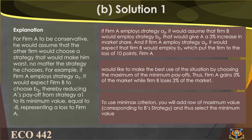If Firm A employs strategy A2, it would assume Firm B would employ strategy B3, giving A a 3 percent increase in market share. If Firm A employs strategy A3, it would expect Firm B to employ B1, putting Firm A to a loss of 10 points. Firm A would choose the maximum of the minimum payoffs, thus gaining 3 percent of the market while Firm B loses 3 percent. To use the minimax criterion, you add a row of maximum values corresponding to B's strategies and select the minimum value.